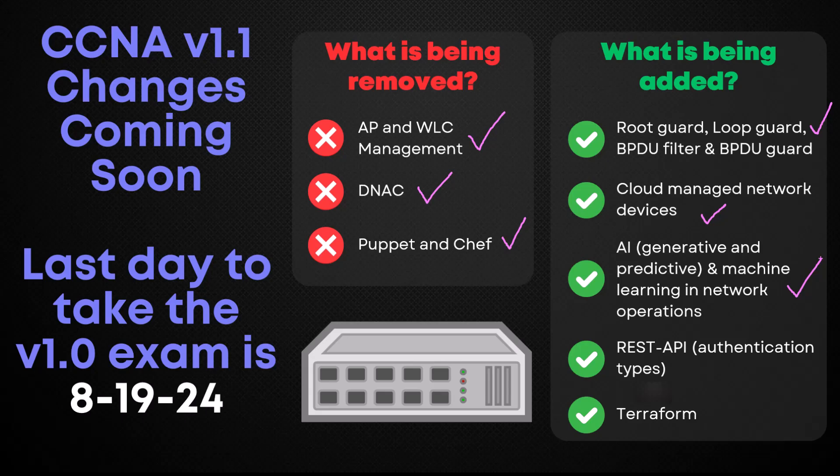They also added AI into the exam, which makes sense because I see more and more people every day leveraging generative AI to automate code or configurations, and predictive AI is being built into actual products. Then there are REST API authentication types — when it comes to network automation, REST API is important to understand, and securing those APIs with different authentication types is something you should know. Last but not least, Terraform is being added — an infrastructure-as-code tool that can help you automate environments at scale, useful for mass deployments of cloud or on-prem network devices.